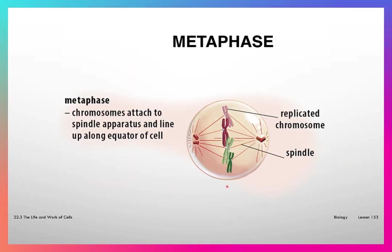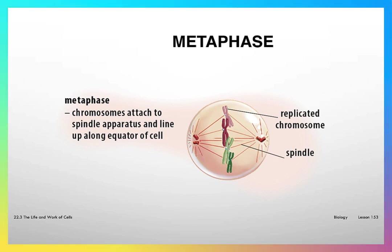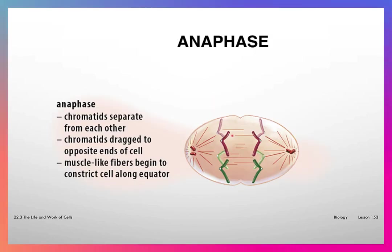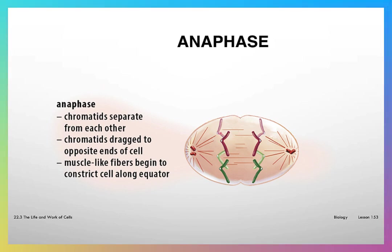In metaphase, the spindle apparatus is now on each end of the cell, with centrosomes at opposite ends of the cell nucleus. The chromosomes have lined up at the center, or equator, of the cell, and the spindles reach out and grab each chromosome right at the centromere. In anaphase, each chromosome separates from its partner and they are dragged to opposite ends of the cell. Then in the middle, the nucleus begins to divide into two nuclei.